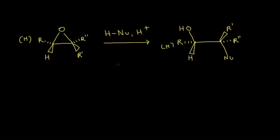Here's the general reaction for a ring opening of epoxides when everything is acid-catalyzed. If I start by looking at my epoxide on the left, I can classify this carbon. This carbon is attached to two other carbons, so this carbon would be secondary. Or if a hydrogen replaces the R group, it would be a primary carbon — so either primary or secondary. If I look at the carbon on the right side, it's attached to three other carbons, so this carbon on the right would be tertiary.